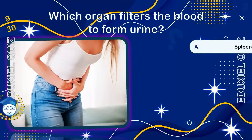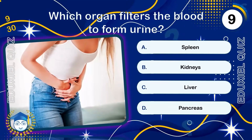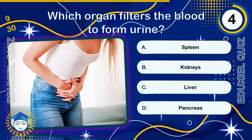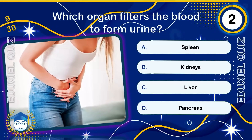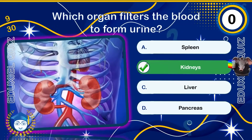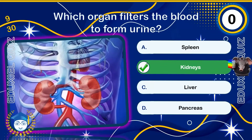Which organ filters the blood to form urine? The kidneys filter about 180 liters of blood per day, producing roughly 1.5 liters of urine. They regulate blood pressure, fluid balance, and even stimulate red blood cell production. Kidney failure requires dialysis or transplantation to sustain life.